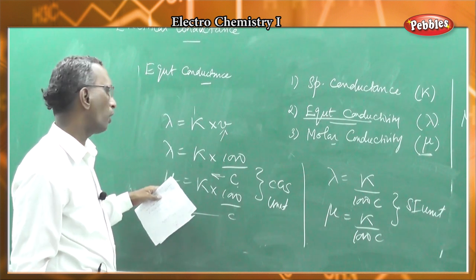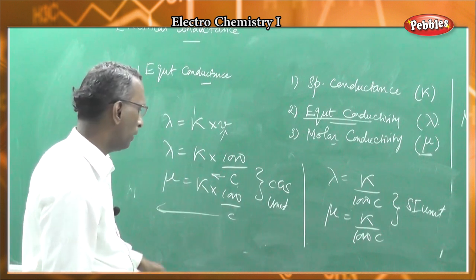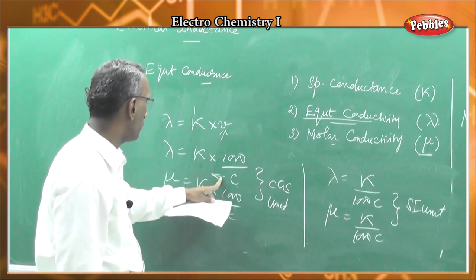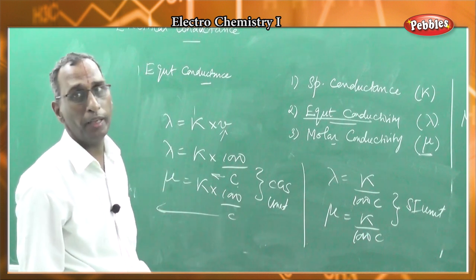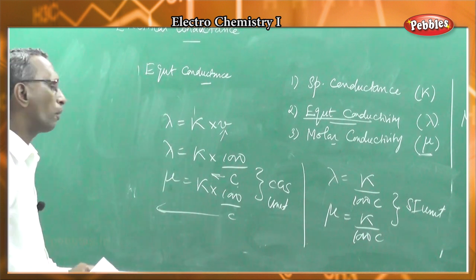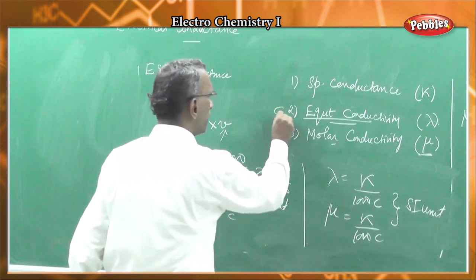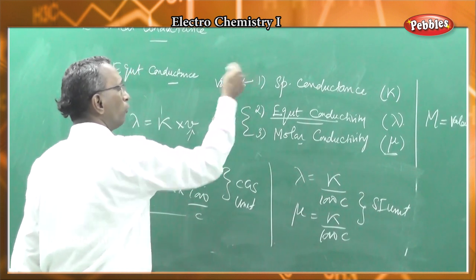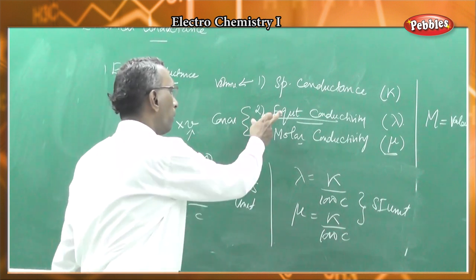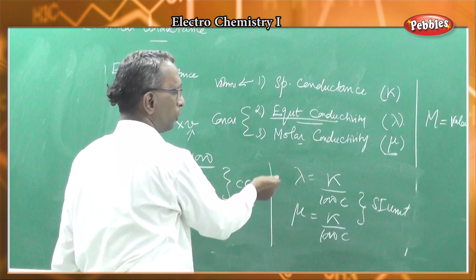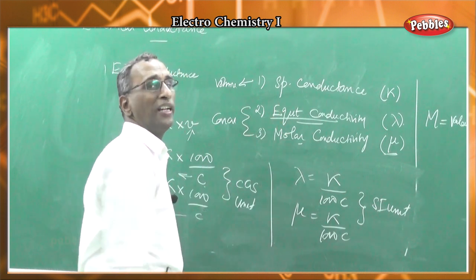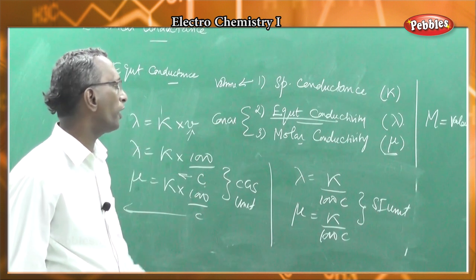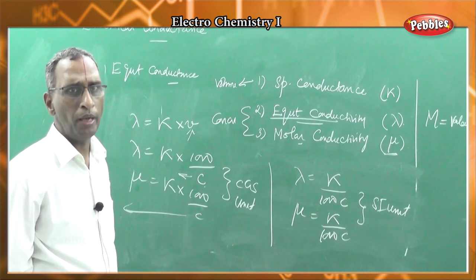To summarize: mu is molar conductance and lambda is equivalent conductance. Specific conductance depends on volume; equivalent conductance depends on normality; molar conductance depends on molarity. The three important conductivity terms for electrolytes are specific conductance, equivalent conductance, and molar conductance.